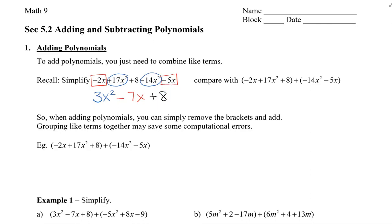Now when we compare with this expression over here to the right, we have two polynomials. We know they're polynomials because there's brackets around each of the separate expressions. Now when we add the two expressions together, we are simply combining again the like terms. Same thing as before: our positive 17x squared — we're going to add because it says add in the middle — negative 14x squared. So that's going to be 3x squared.